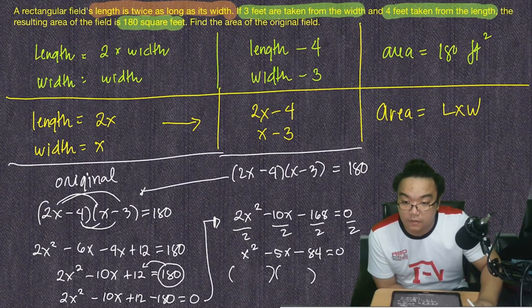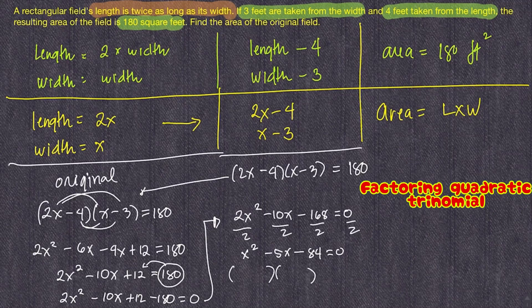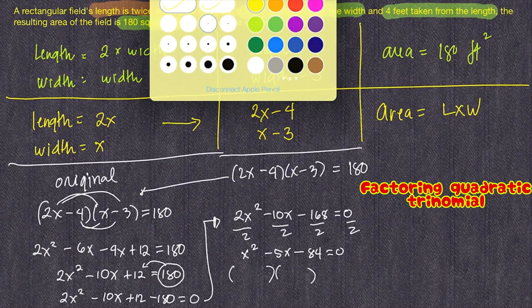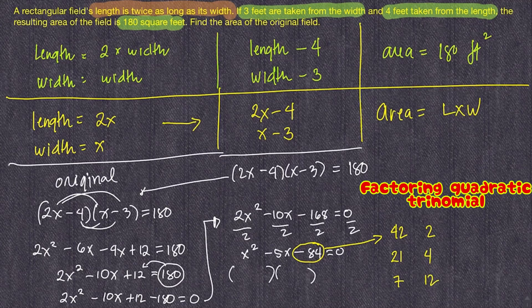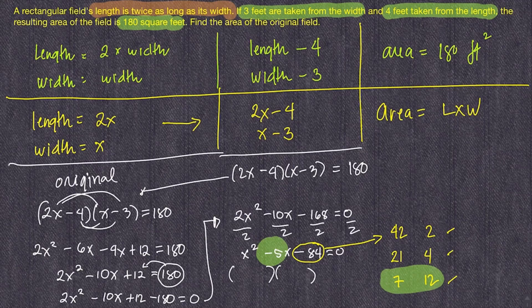To factor, focus on the third term and list all factors of 84: 2 and 42, 21 and 4, 7 and 12. Among these, which pair gives us negative 5 for the middle term? The pair 7 and 12 works — 7 minus 12 gives negative 5. So the factors are (x + 7) and (x − 12).